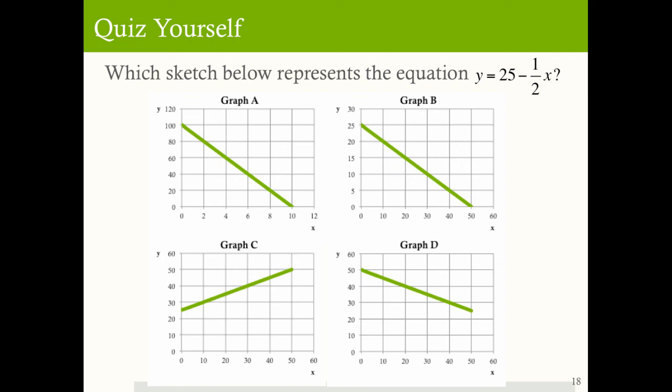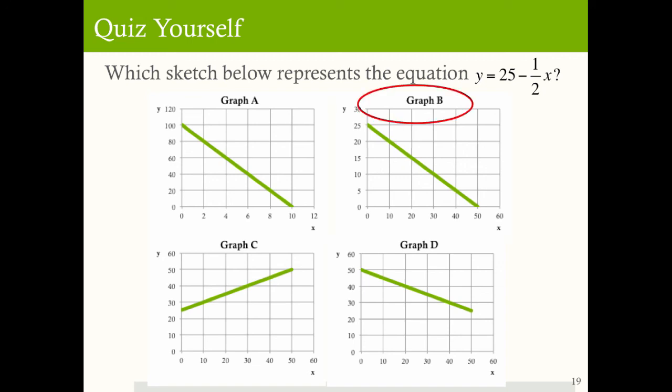Which sketch below represents the equation y equals 25 minus one-half x? Pause the video and try to answer. Looking at the equation, the vertical intercept is 25 and the graph should be downward sloping because the slope is negative one-half. That immediately eliminates graph c. And knowing the vertical intercept is 25 eliminates graphs a and d. So the answer is graph b.